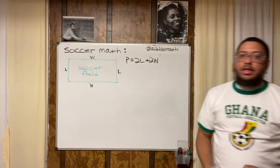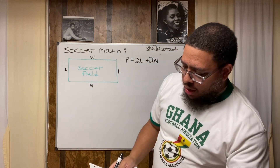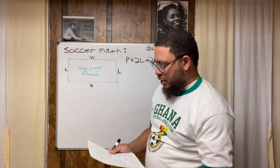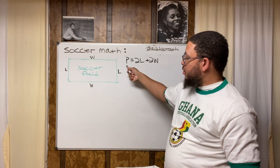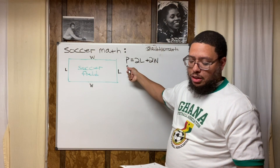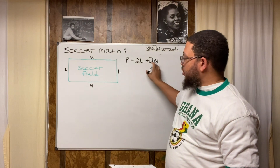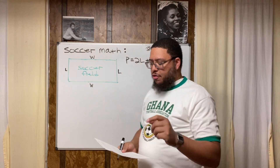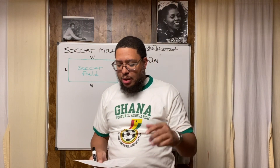Now let's go back to the word problem. It says the perimeter of the soccer field is 260 feet, so we know P equals 260. We'll replace the letter P with 260. We don't yet know the length or the width — we're going to figure those out.